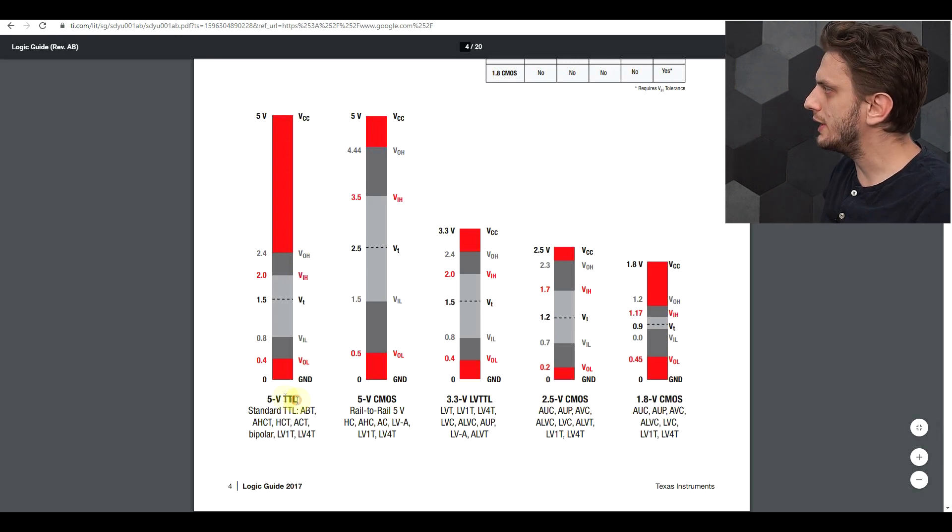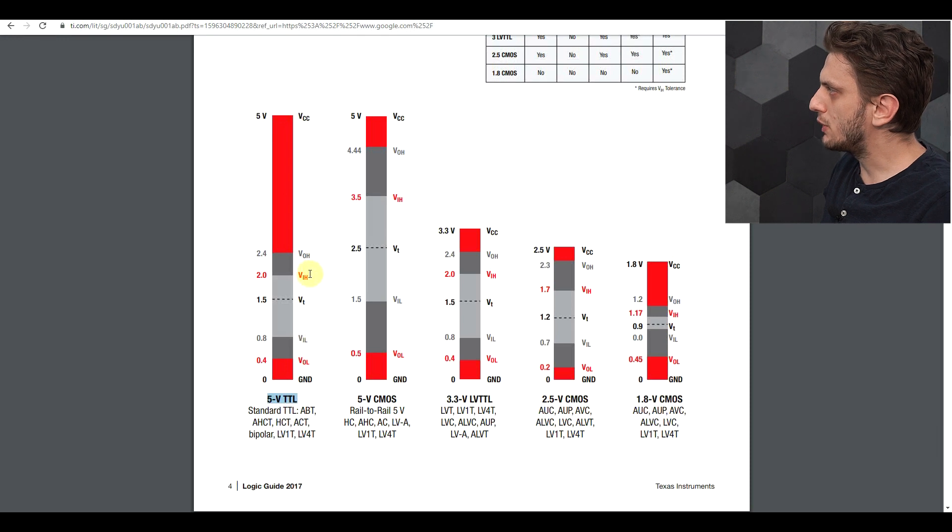So for example, if we take the case of the 5V TTL, the thresholds for input low and input high mean that any voltage that the input sees below 0.8 is definitely interpreted as a logical zero, and any voltage that the input sees above the input high threshold is definitely interpreted as a logical one.